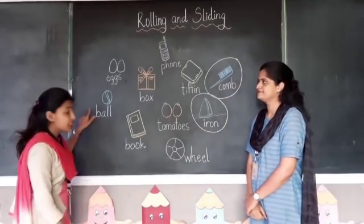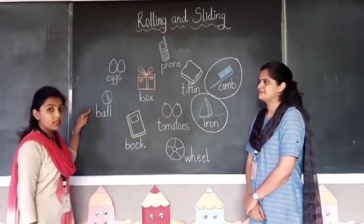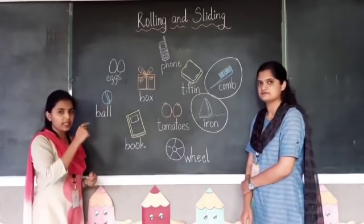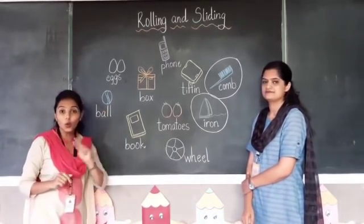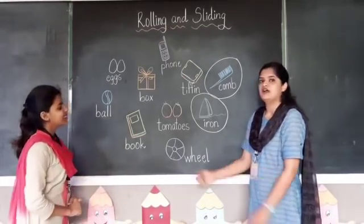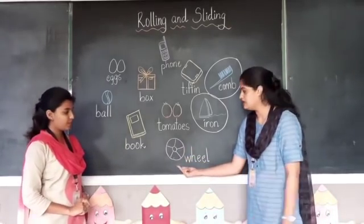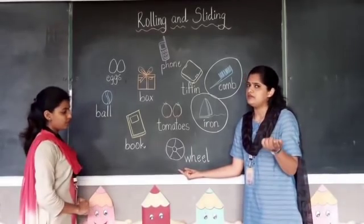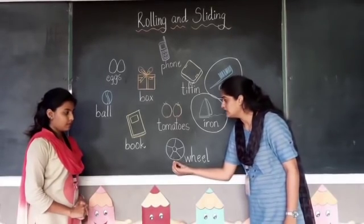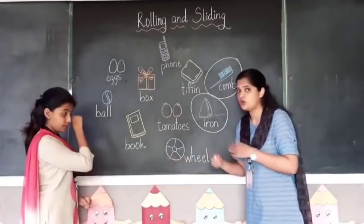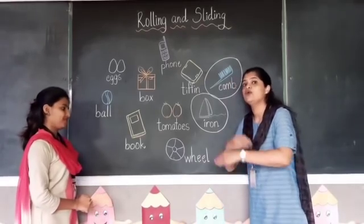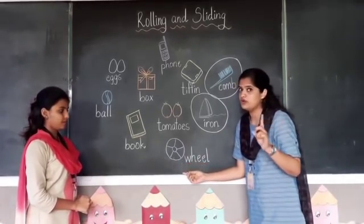Can you see the next picture? Yes — it is a ball. As you can see, the ball has a curved surface. Does it slide? No, it rolls. So we go to the next picture. It is a wheel. Wheel has a curved surface, so will a wheel roll or slide? You are right — it will roll. So I am not going to circle the wheel.